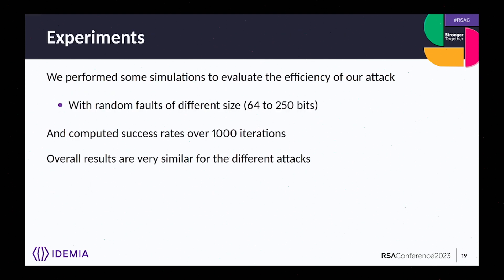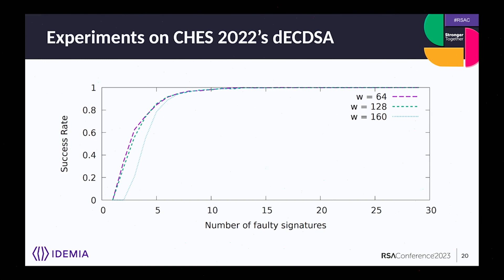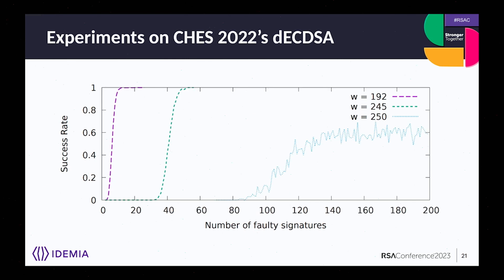Simulations were performed to check attack efficiency. We drew random faults of sizes from 64 to 250 bits and computed success rates over 1,000 repetitions. All results are quite similar across different attack scenarios since the HNP instances are structurally the same. With just 2–3 faulty signatures, we succeed with low probability; with 10–15 faults, we reach 100% success rate for faults below 160 bits. For larger faults up to 245 bits, 100% success is still reached; beyond that, success rate is limited to around 60%.